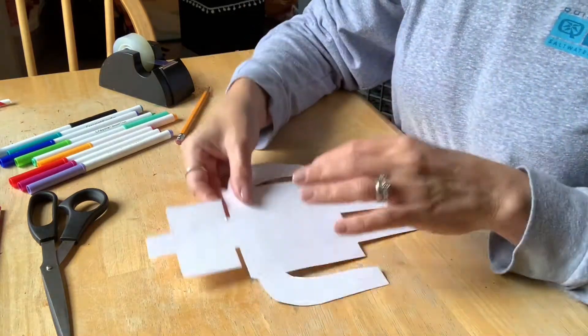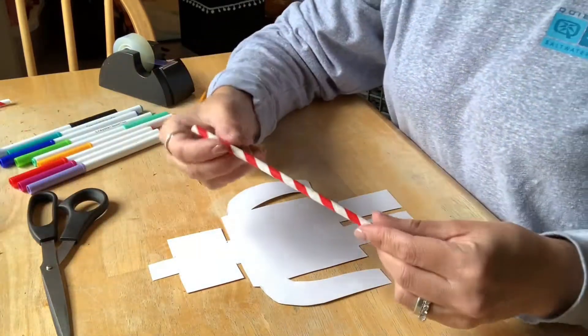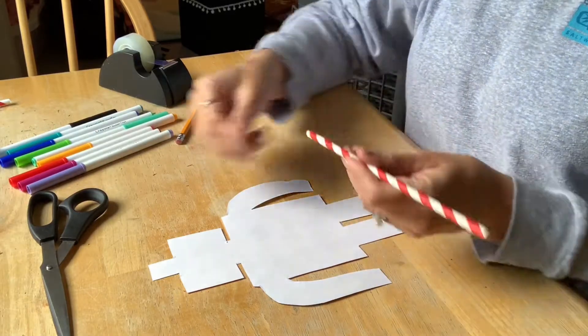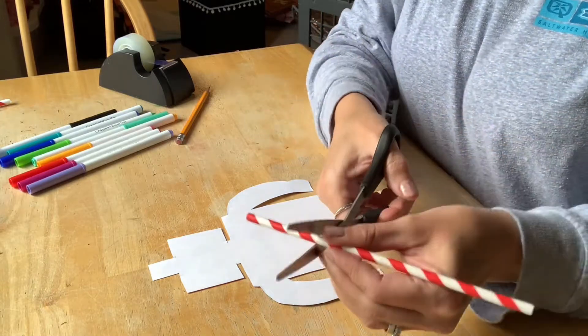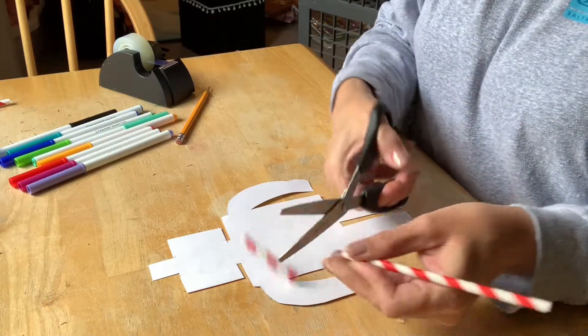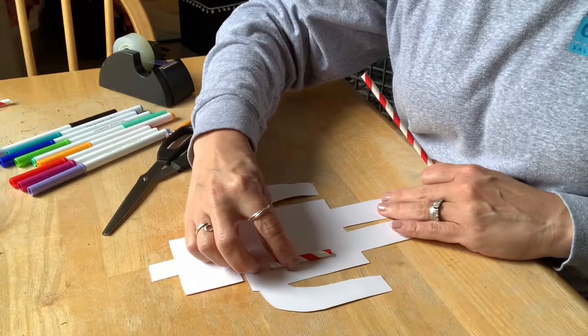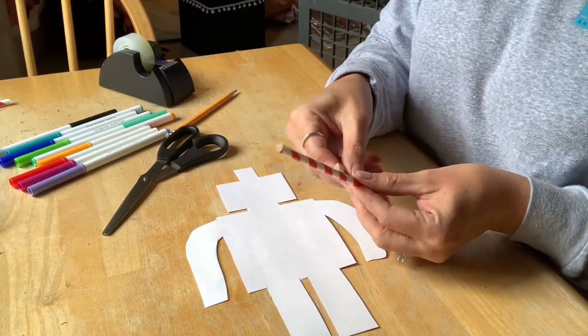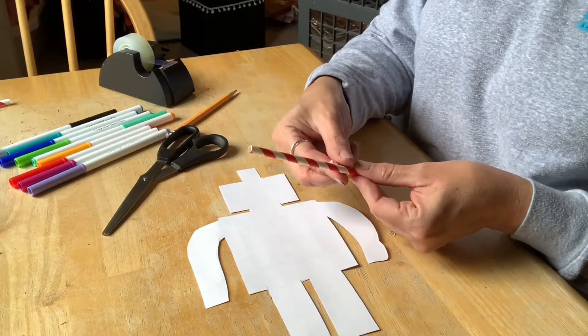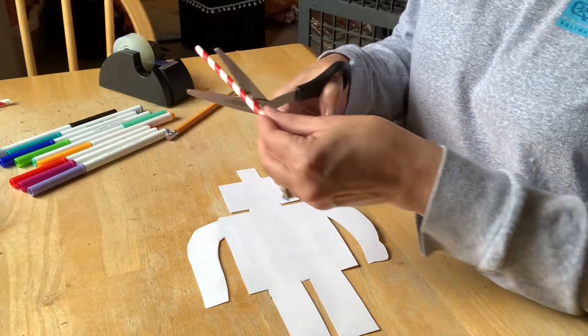The next thing you want to do is flip your robot over and you're going to cut about two inches in length segments of your straw. It should measure out about like this on your robot. That's why you want to make sure the robot's back is nice and broad so that it can climb.